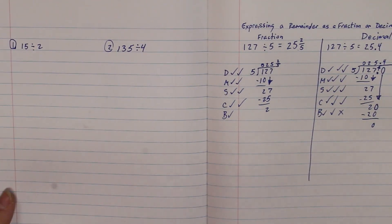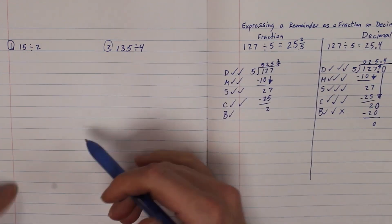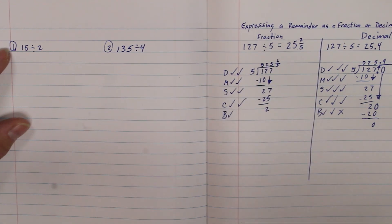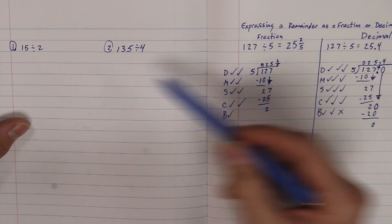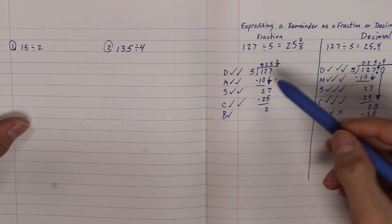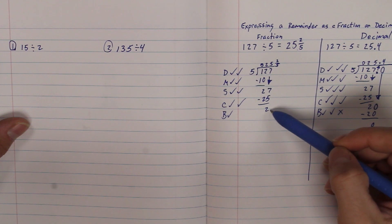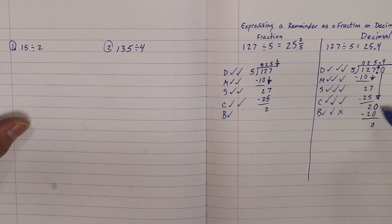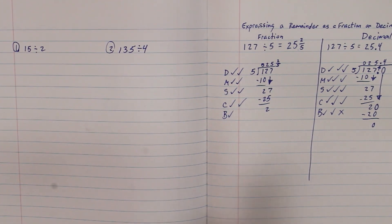All right, so that's it! On the left side, we want you to solve two problems: 15 divided by 2 and 135 divided by 4. Express both as a fraction and as a decimal. For the fraction, remember: take the remainder out of the divisor — so 2 out of 5 remaining. For the decimal, add a decimal and zero after the whole number in the dividend — value doesn't change — then bring the decimal to the top, and bring down the zero only. You've got this — you are awesome, you can do it, you're amazing. Good job, guys!